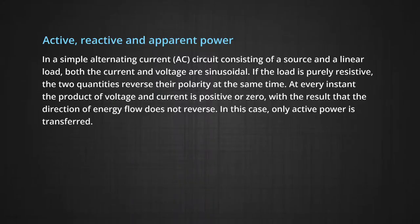We can explain these different types of power like what is active power, reactive power and apparent power. In a simple alternating current circuit consisting of a source and a linear load, both the current and voltage are sinusoidal. That is if the load is purely resistive, the two quantities reverse their polarity at the same time. At every instant the product of voltage and current is positive or zero, with the result that the direction of energy flow does not reverse. In this case, only active power is transferred.